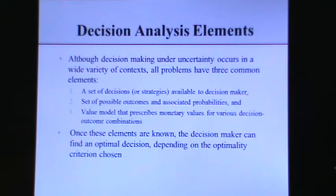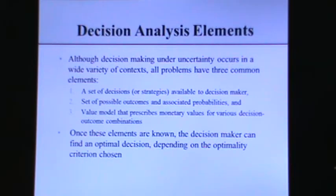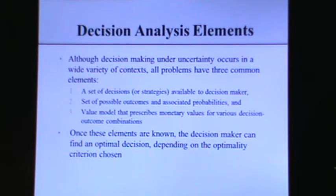Decision analysis elements — all complex decisions have common elements: a set of decisions (evacuate, recommend, or force evacuation), a set of possible outcomes (costs and potential lives lost for each decision), and probabilities that the hurricane might strike. Once we have these key elements — decisions, expected outcome values, and probabilities — we can apply the techniques learned in this class.